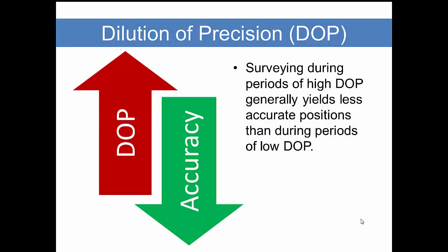Dilution of precision is an indicator of expected positional quality. So if we're doing surveying during periods of high dilution of precision, we will see less accurate positions than during periods of low dilution of precision. Consider that precision is a good thing, but if we dilute our precision, then we're doing a bad thing. When dilution of precision is high, accuracy goes down.